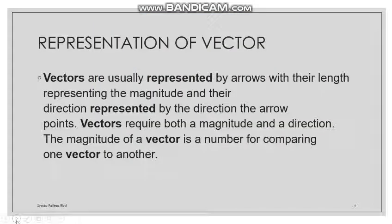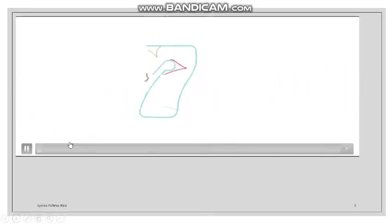Now let's talk about the representation of a vector. We represent a vector using an arrow with an arrowhead. The arrowhead represents the ending point of the vector. The arrow represents the vector's magnitude, direction, and everything needed. Let's play the animation to see the mathematical representation.